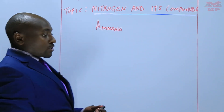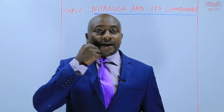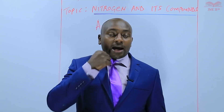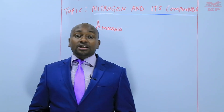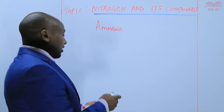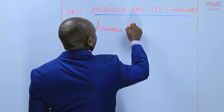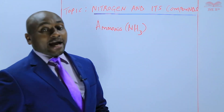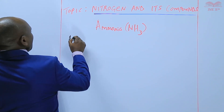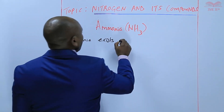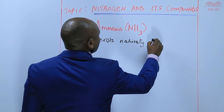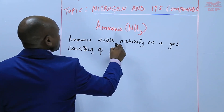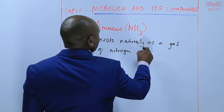When we talk of ammonia as one of the compounds of nitrogen, we can say that ammonia exists at room temperature as a gas. This gas is a combination of nitrogen and hydrogen in the ratio of 1 to 3. So basically the formula for ammonia is NH3, to show that for every one atom of nitrogen, there are three atoms of hydrogen.